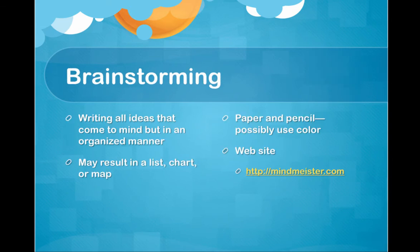Brainstorming is writing all the ideas that come to mind, but in an organized manner. This may result in a list, chart, or map. You would probably use paper and pencil — possibly colored pencils so that you can circle ideas that are good, circle all the ideas in green that are related after you're done brainstorming. Or you can use a website to create your brainstorming, and I have the address right there.